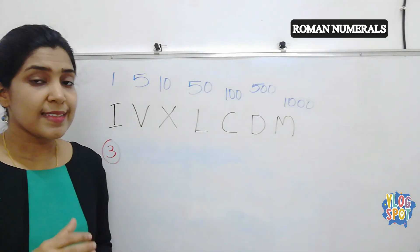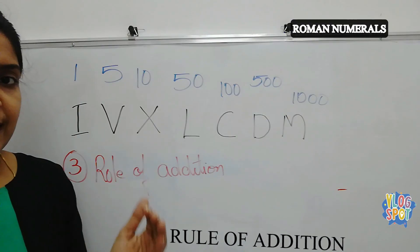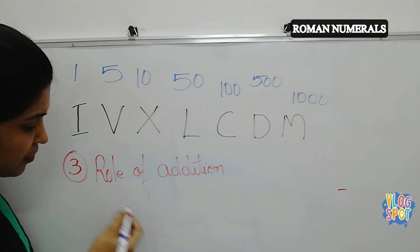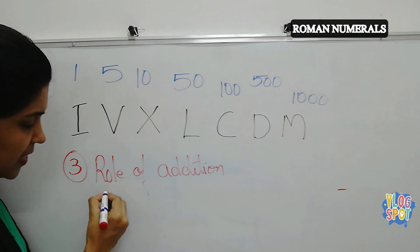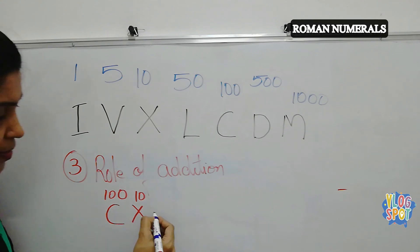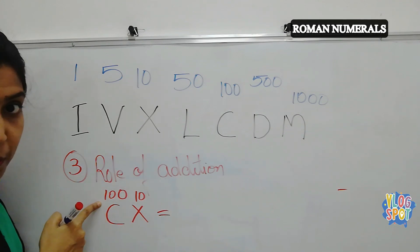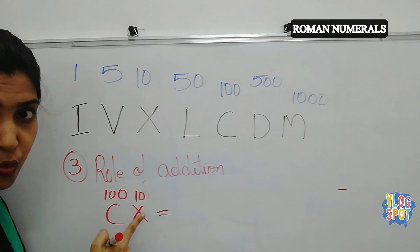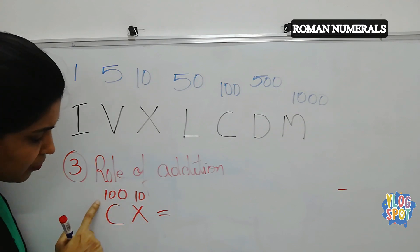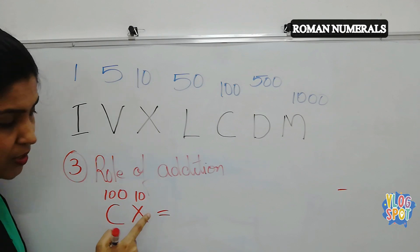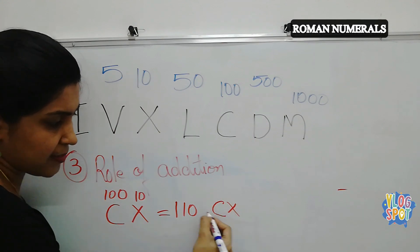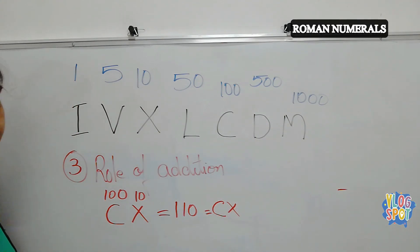Now the third rule — the rule of addition. If the first number is a bigger number, for example CX: C represents 100, then X represents 10. The first number is bigger than the second number, so we do addition — 100 plus 10 equals 110. So how to write 110? CX. That is the third rule: if the first number is smaller, subtract; if the first number is bigger, add.